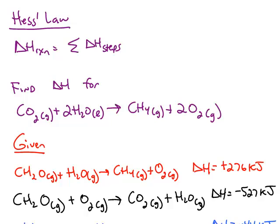If you're trying to find delta H for a certain reaction, one of the ways you can do it is called Hess's law. Hess's law says the overall delta H for the reaction you're studying is simply the summation of any steps for that reaction.